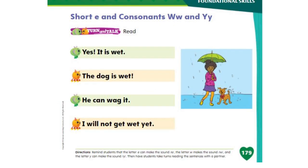Okay everybody, now it's your turn to do some work. If you open your books on page number 179 for short E and consonants W and Y, what you need to do is read the four sentences, have one of your family members take a video of your reading, and send it to me please. Have a good day. Bye bye!